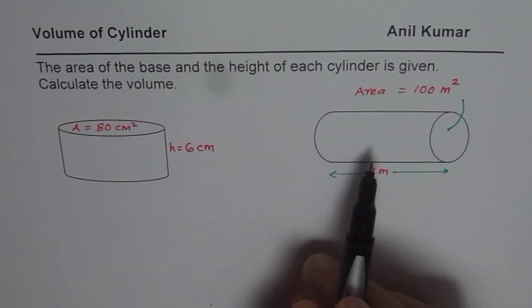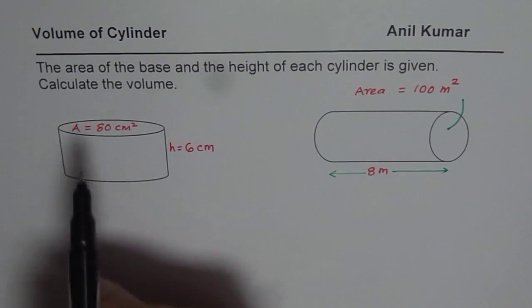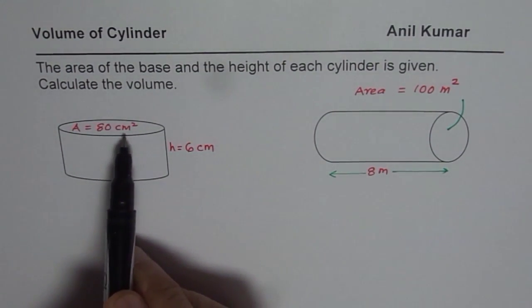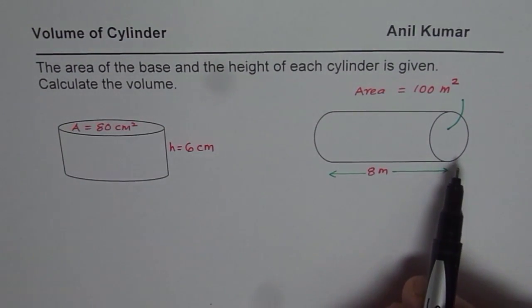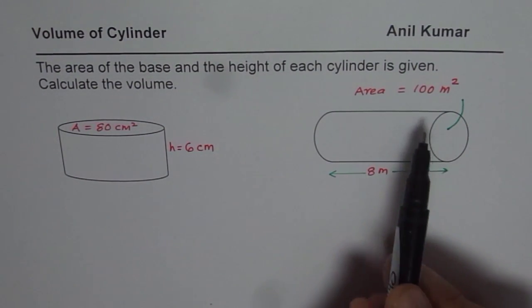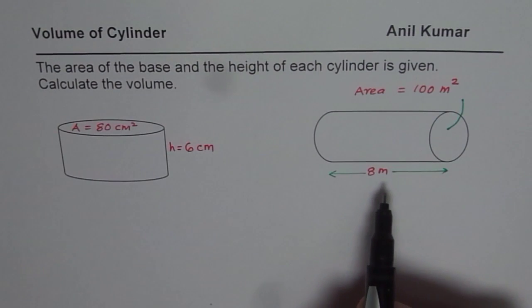So these are the two cylinders. We are given area as 80 centimeter square for the first one with height of 6 centimeters. The second one has area of the base as 100 meter square and the height is 8 meters.